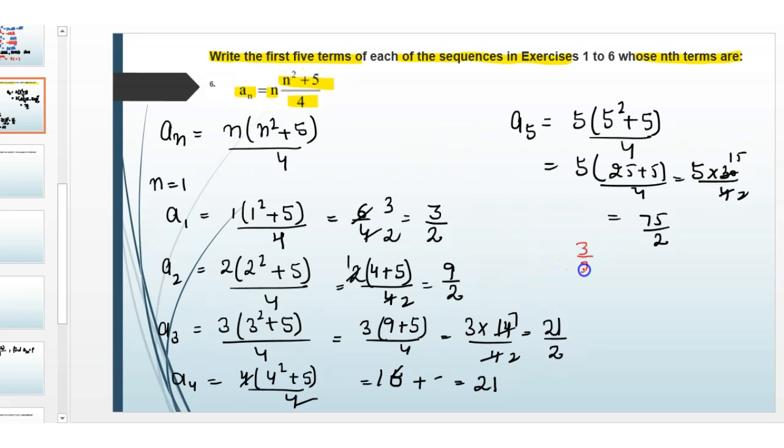So the required sequence is 3/2, 9/2, 21/2, 21, and 75/2. This is your answer.